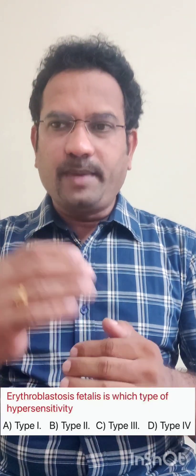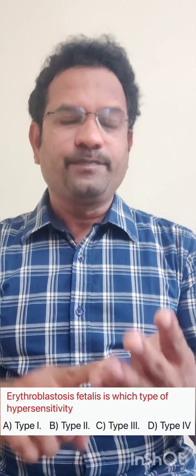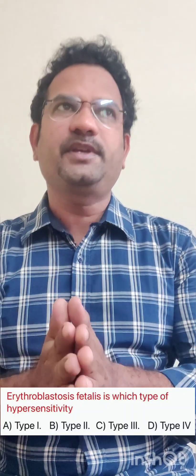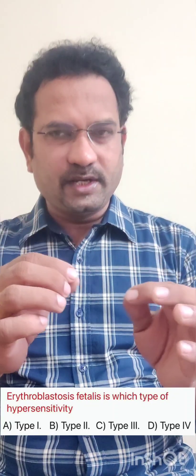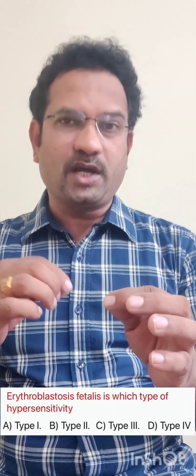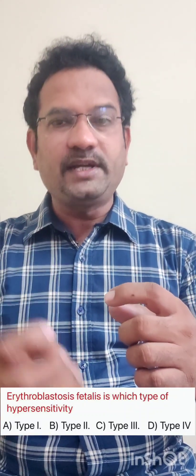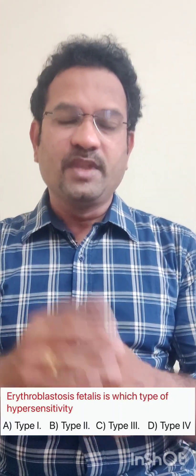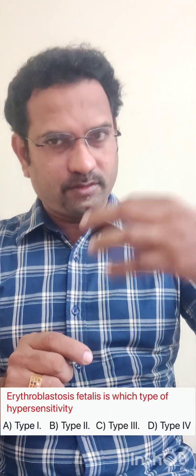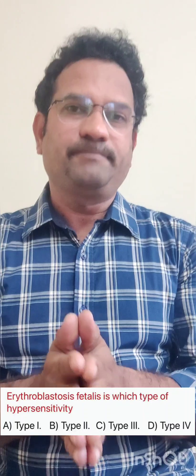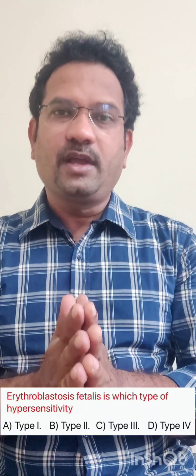Now the next question: erythroblastosis fetalis causes which type of hypersensitivity — type 1, type 2, type 3, or type 4? Erythroblastosis fetalis occurs when there is an incompatibility in the Rhesus factor. If a mother is Rh-negative and carries an Rh-positive baby, the first delivery is fine. But during delivery, the mother's body develops anti-Rh-positive antibodies. If she carries an Rh-positive baby a second time, those antibodies attack the baby and can cause death. This is called erythroblastosis fetalis.